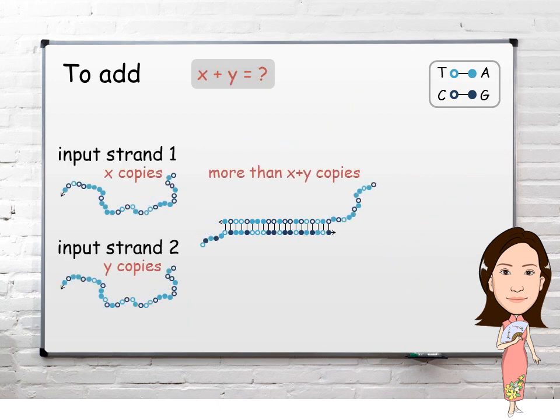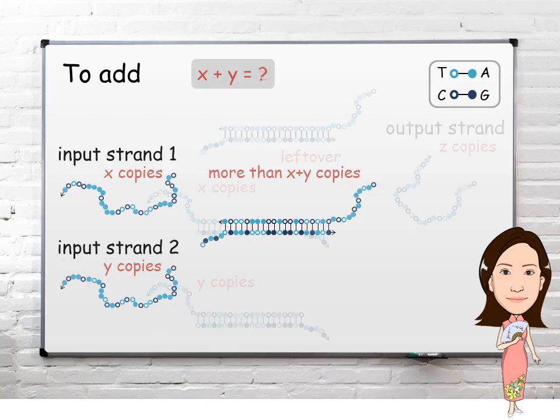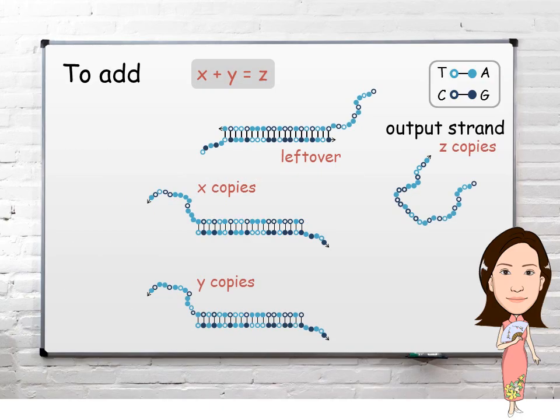Generally, to add x and y, one can start with x copies of input strand 1 and y copies of input strand 2. As long as there are more than x plus y copies of the initial double-stranded molecules, the number of output strands produced will be the sum of x and y.